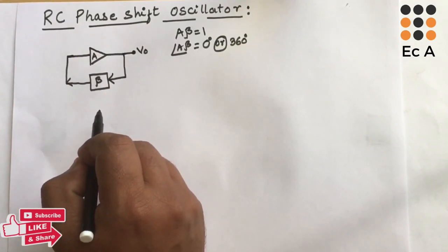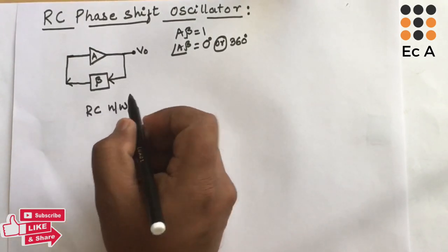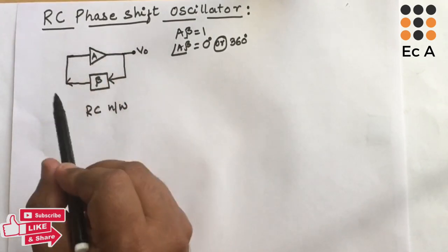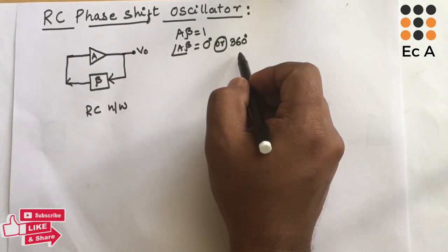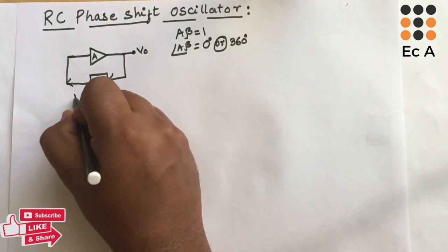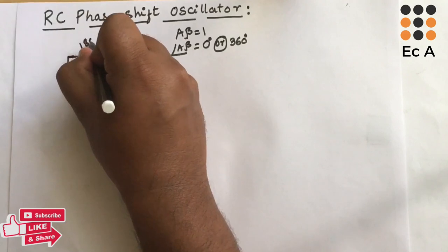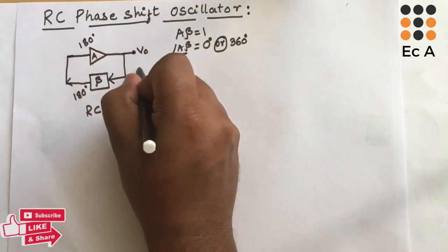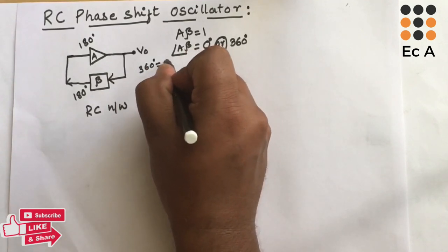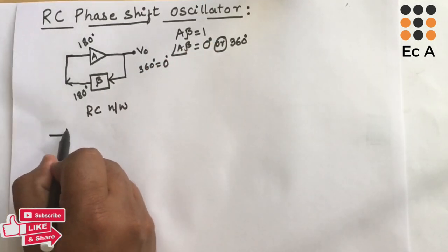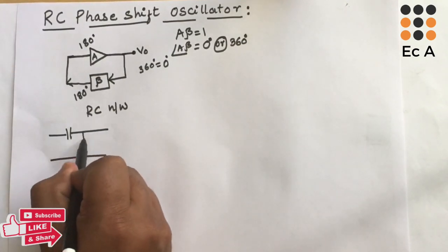In an RC phase shift oscillator, the feedback stage uses a resistor and capacitor combination network, known as the RC network — hence the name RC phase shift oscillator. To obtain a 0° or 360° overall phase shift, the feedback circuit should provide 180° phase shift and the amplifier stage should also provide 180° phase shift, giving 360° total.